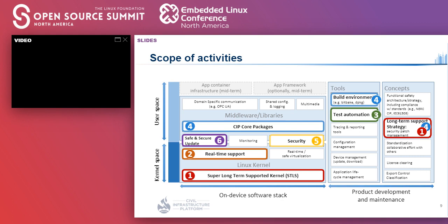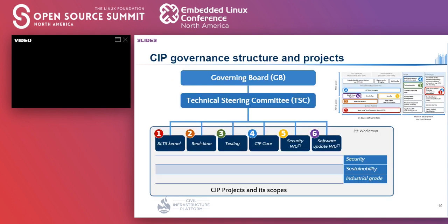There are various activities listed as candidates to achieve our goals. Among them, we selected activities numbered 1 to 6 in the table by gathering member companies' opinions. CIP governance structure includes a Governing Board organized with platinum members, which decides whom CIP should collaborate with, what CIP should invest, and how budgets should be allocated. All technical issues and directions are discussed at the Technical Steering Committee, in short TSC. All member companies can join TSC meetings, which are usually held once every two weeks on the web.